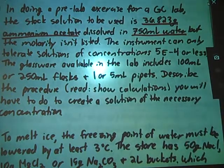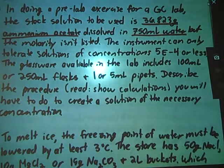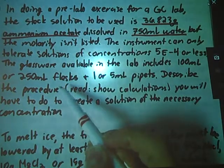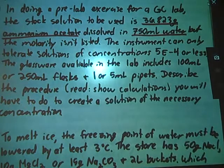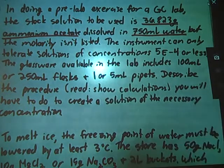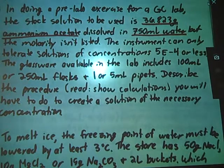It tells you that the glassware available in the lab includes 100 milliliter or 250 milliliter volumetric flasks, in addition to 1 or 5 milliliter pipettes. Then it asks you to describe the procedure that you will have to do in order to create a solution of the necessary concentration.